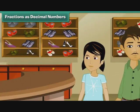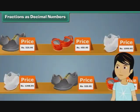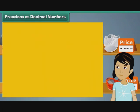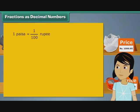Arpita went with her father to buy her school shoes. Prices of footwear in the store were expressed as decimal numbers. She wondered what the decimals in the prices meant. 100 paise make 1 rupee. In other words, 1 paise is 1 by 100th of a rupee. It can also be written as 0.01 rupee.